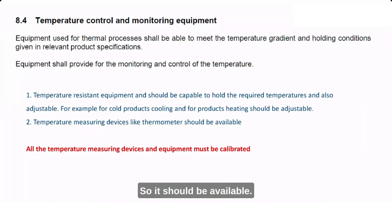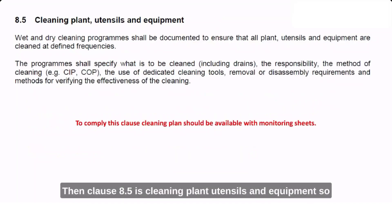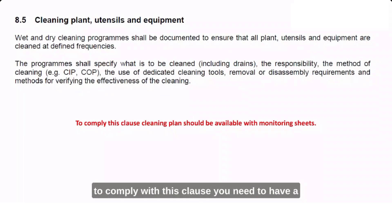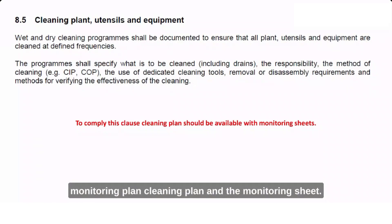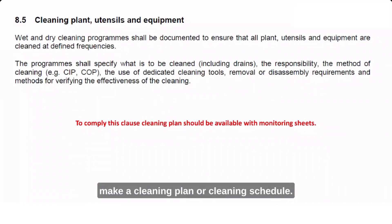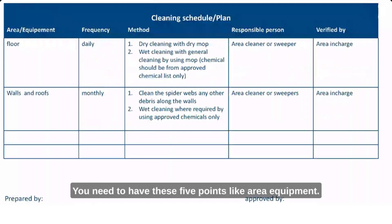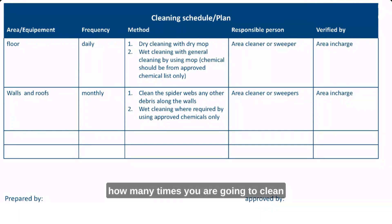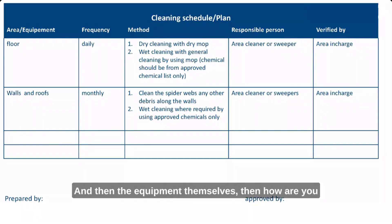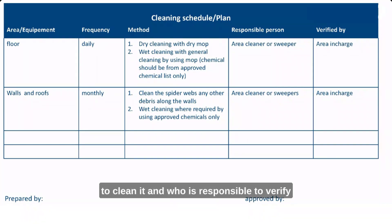Clause 8.5 covers cleaning of plant, utensils, and equipment. To comply, you need a cleaning plan and a monitoring sheet. A cleaning plan should include five key points: the area or equipment, the frequency of cleaning, the cleaning method, who is responsible for cleaning, and who is responsible for verifying that cleaning was done.